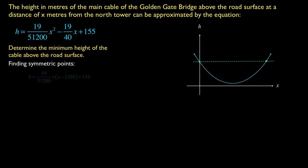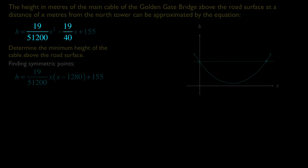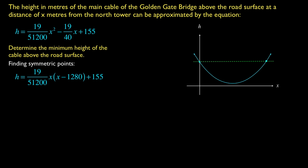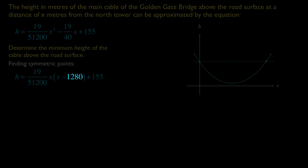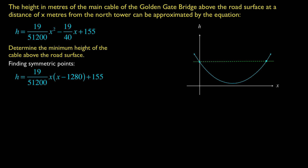It looks a little bit daunting, but it's actually not that bad. Common factoring out the 19 over 51,200 x, inside the brackets we are left with x subtract 1280, and if you're unsure how that was done, I took the 19 over 40 and divided by 19 over 51,200, and interestingly enough, that comes out to be 1280. And if you did a little bit of research on the Golden Gate Bridge, you might find out the significance of that 1280.